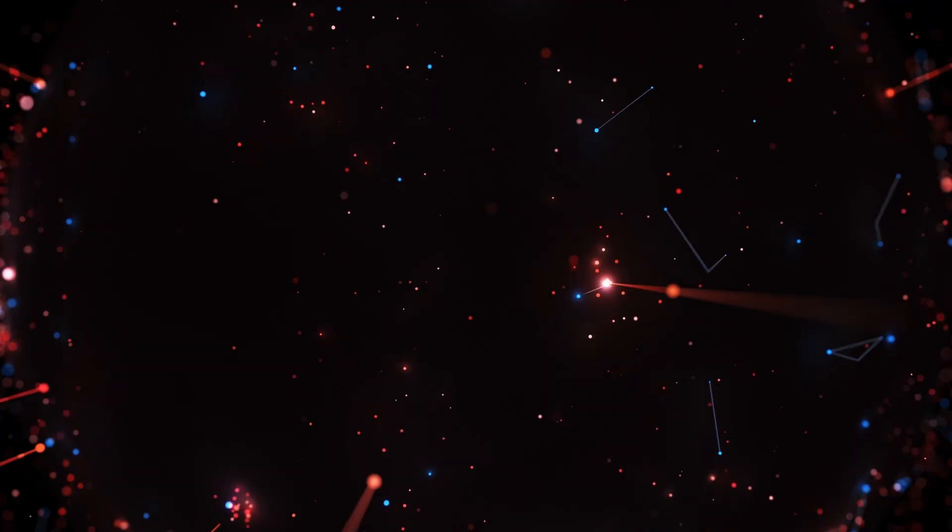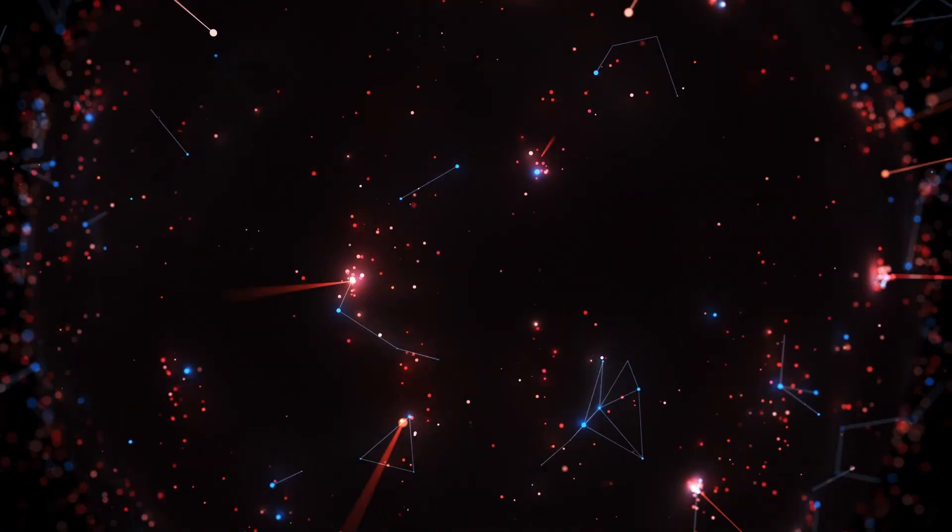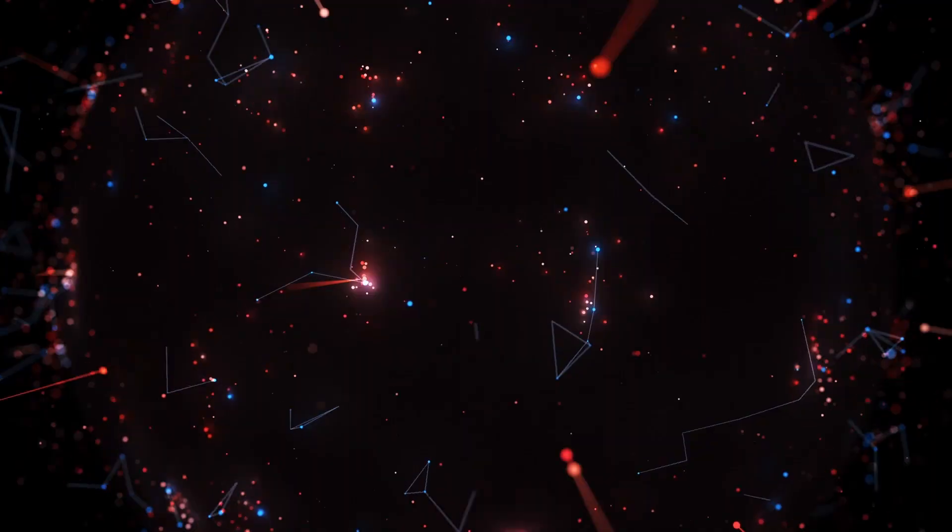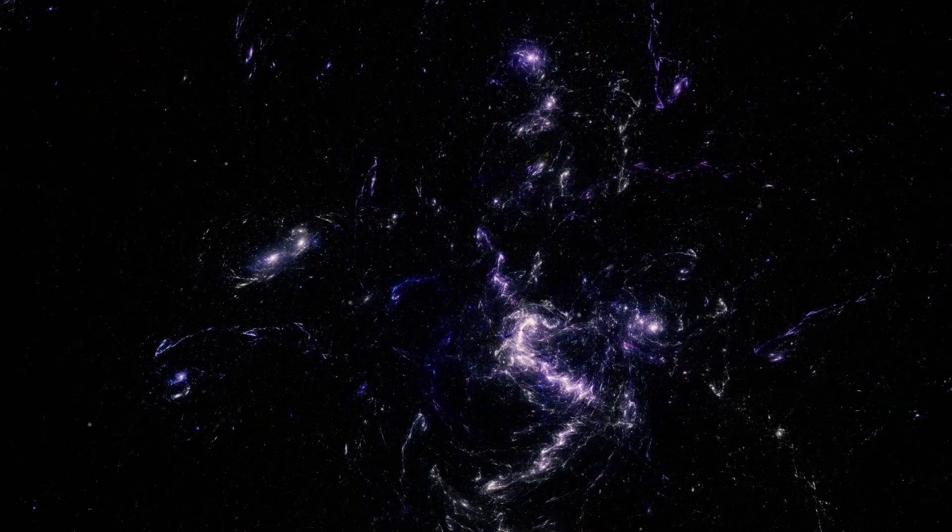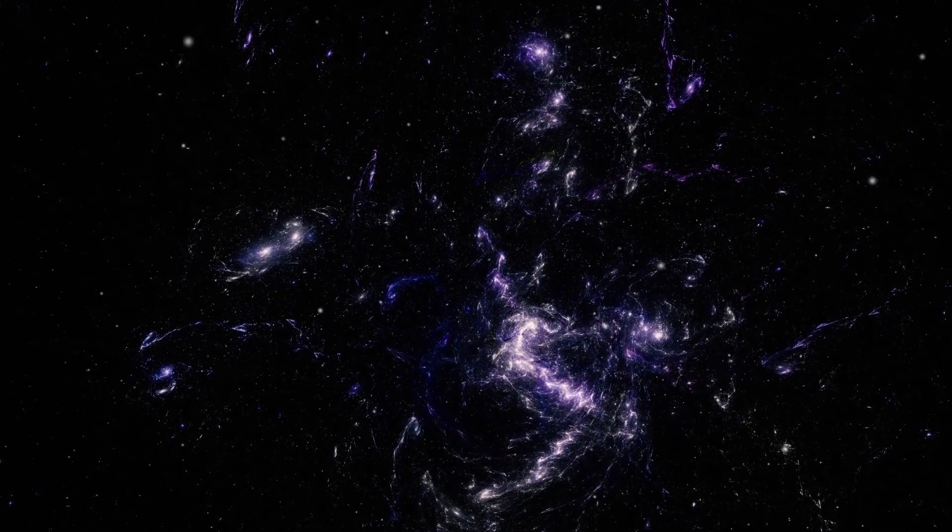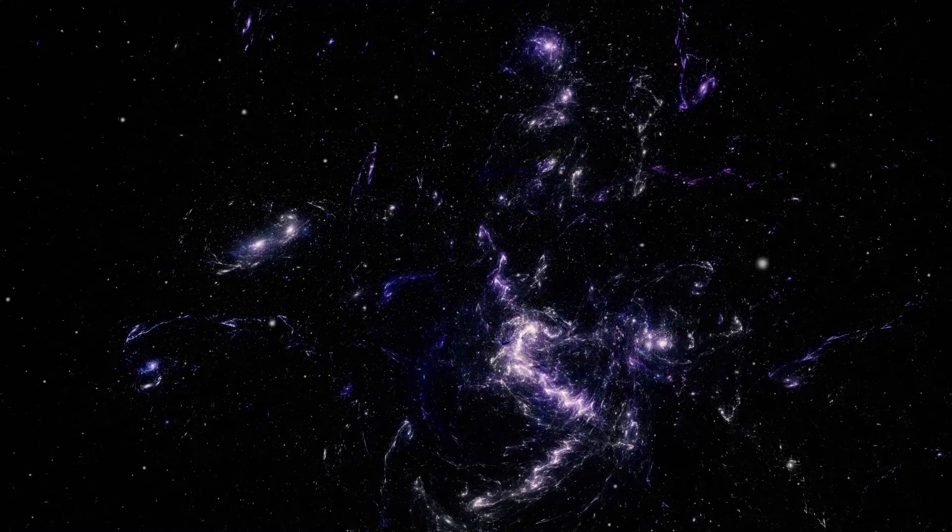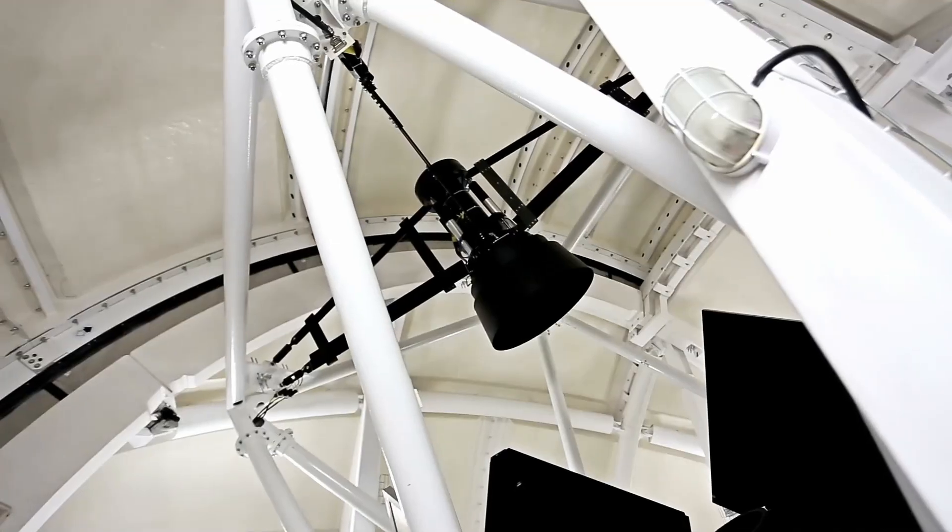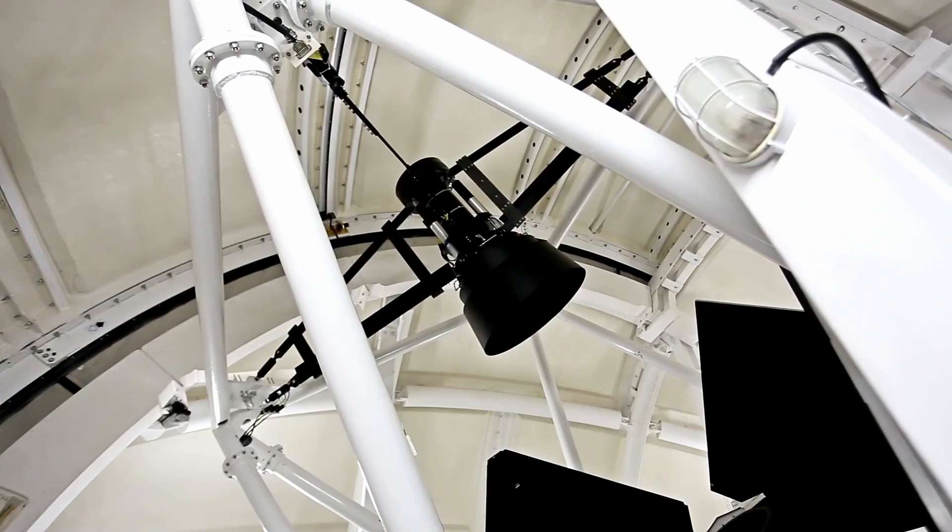Third scenario, and this one sends a chill down your spine. A captured interstellar object. Remember Oumuamua? That elongated visitor that tumbled through our solar system in 2017. What if something similar got trapped in Jupiter's gravitational embrace millions of years ago? Something with an unnatural shape that simply shouldn't exist here?